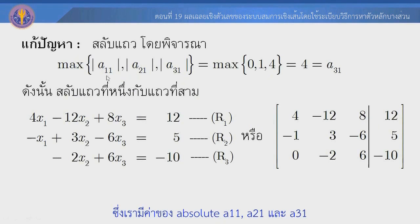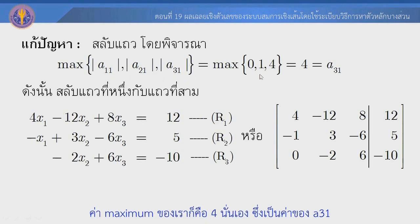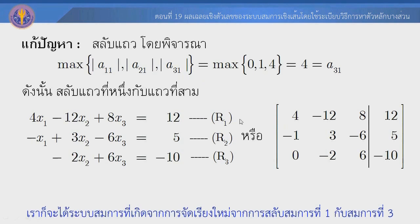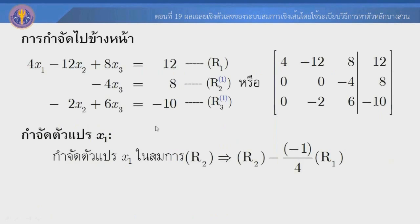We select column 1 and compare absolute values of A11, A21, and A31. The maximum value is 4, which is the value of A31. So we swap rows 1 and 3. After the swap, we now have the 3x3 system with row 3 moved to row 1.